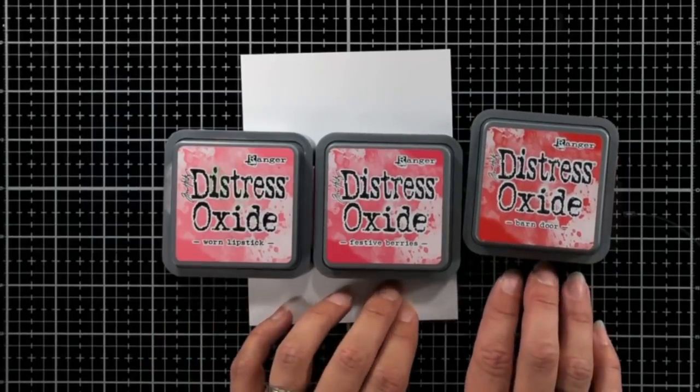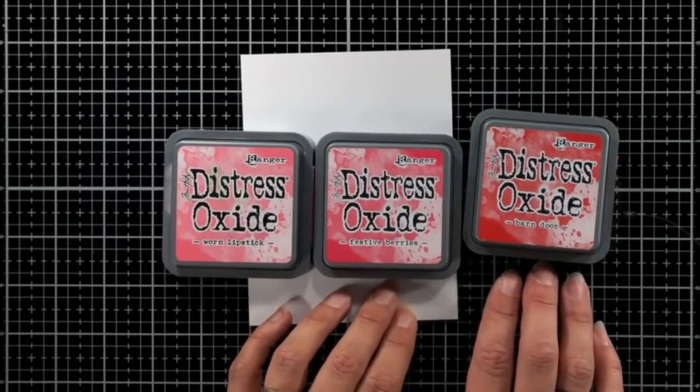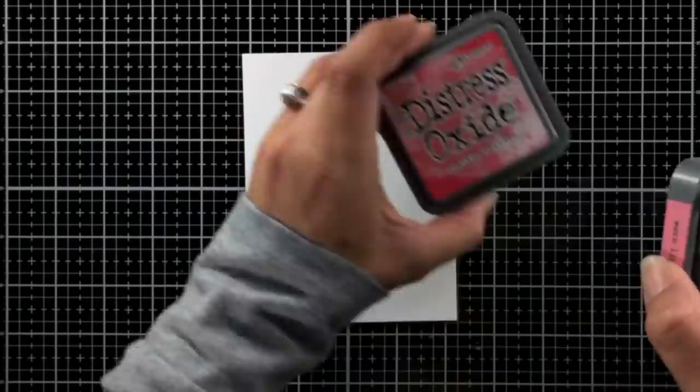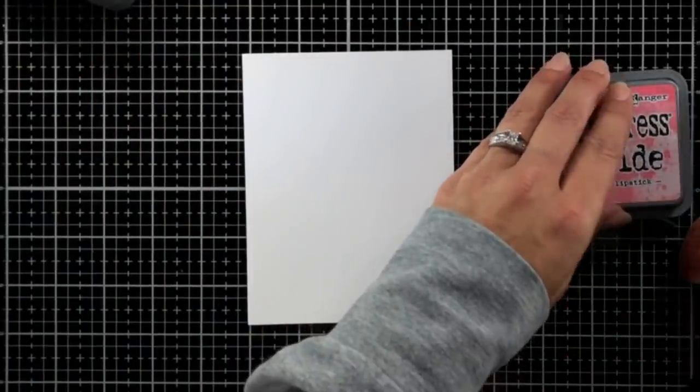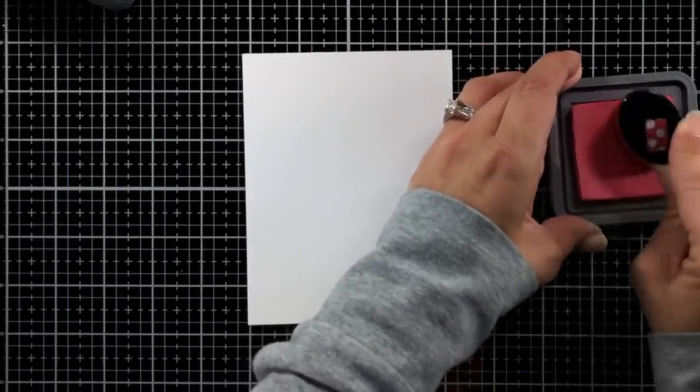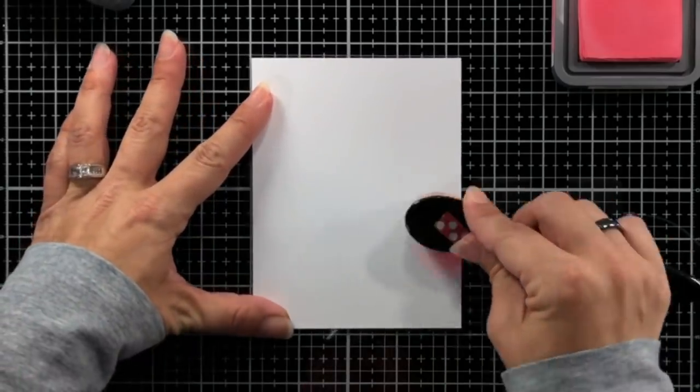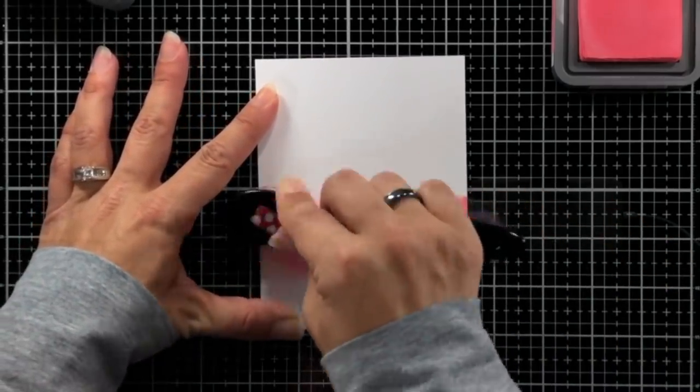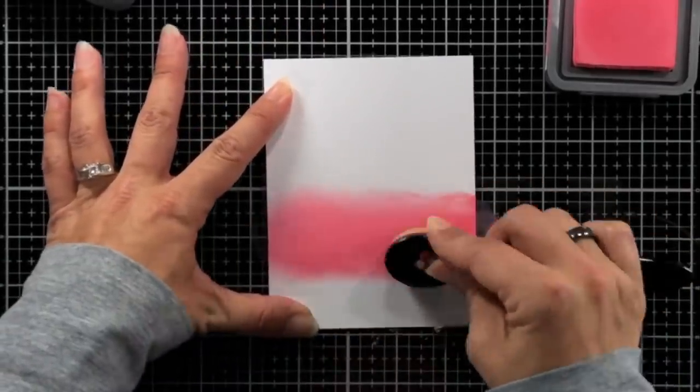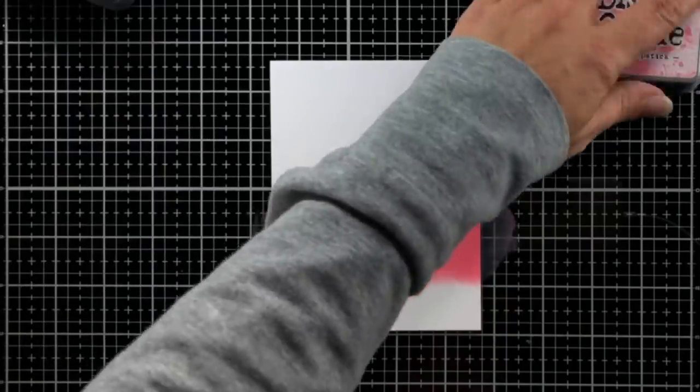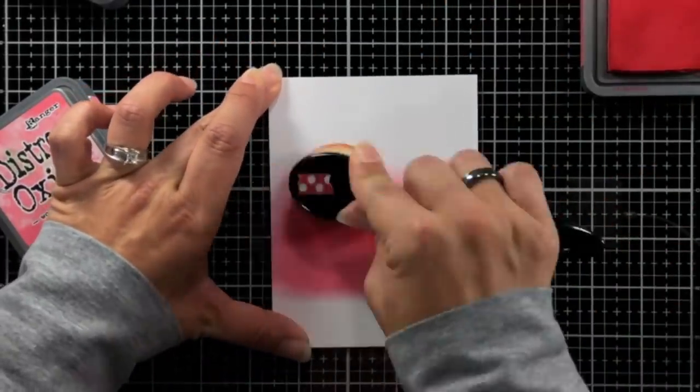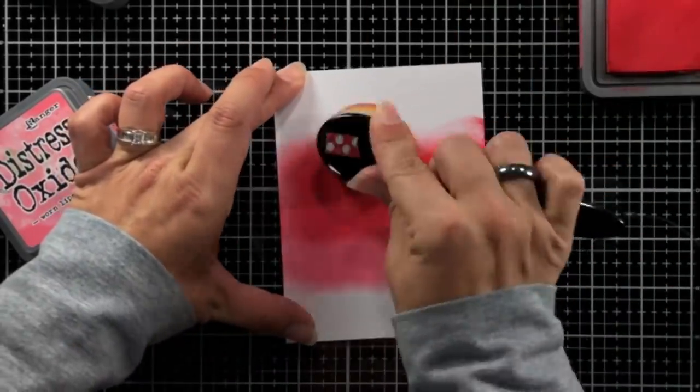Next I'm going to work on my background for my card. Now I'm actually going to repeat this step, so I'll have two panels ink blended the same way. I'm only going to show you just one on screen for now. I'm going to be using worn lipstick, festive berries, and I had started with barn door but then switched to aged mahogany because barn door just wasn't giving me enough of a contrast in the colors. And I'm using the Lawn Fawn white cardstock to ink blend.